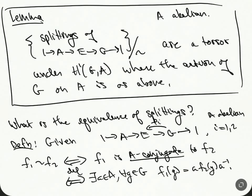So this is what the definition of equivalence is. We take these splittings and we mod up by this relation, so we look at splittings up to this conjugation, and these will be in bijection with group cohomology. So let's do the proof.